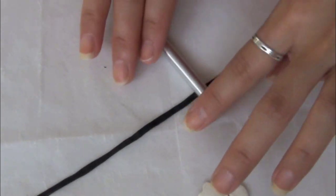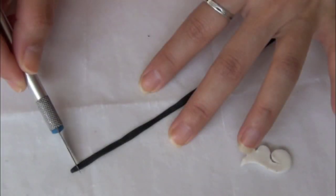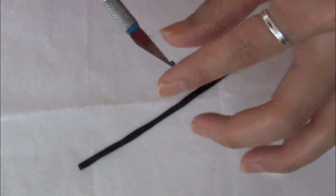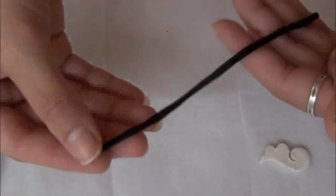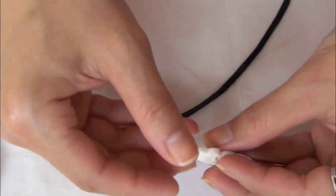Gently flatten the clay out a little bit. Be sure the width of this clay matches the height of the wing.